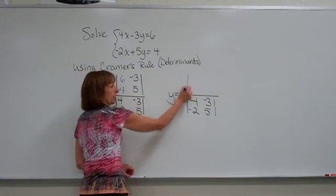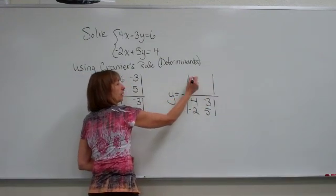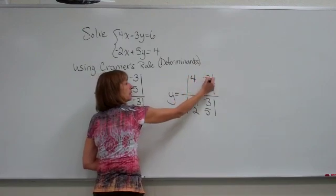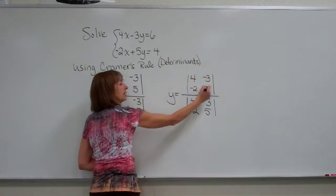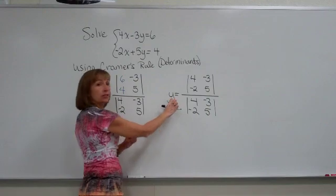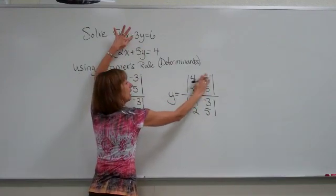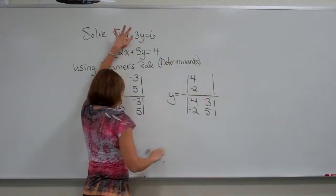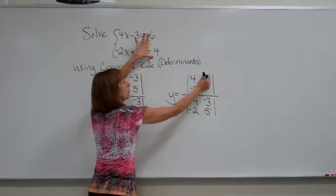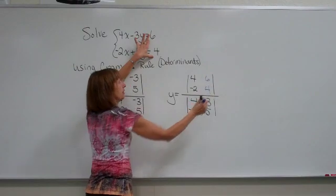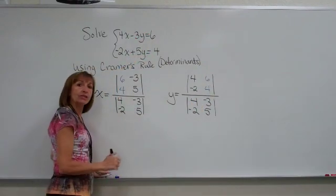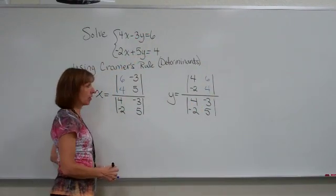For the y's numerator, you're again going to write down the determinant just like it looks in the denominator. But when solving for the y variable's value, you erase out the y's coefficients and replace it with the constants from the other side. So this sets up our determinants to solve our system.